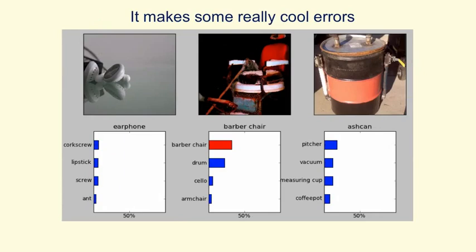And it makes some very cool errors. The image on the left is an earphone — it doesn't get anything like an earphone — but its fourth bet is that it's an ant. At first you think that's crazy, but if you look carefully, you can see it's a view of an ant from underneath: the eyes are looking down at you and you can see the antennae. On the right it doesn't get the right answer, but all of its answers are cylindrical objects.